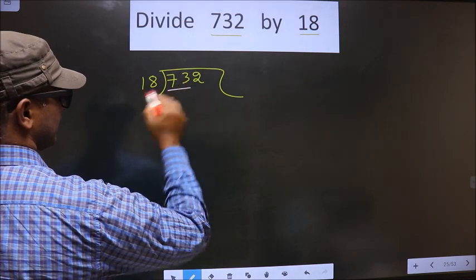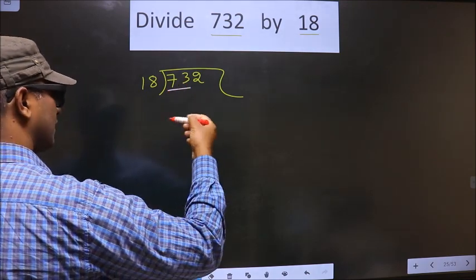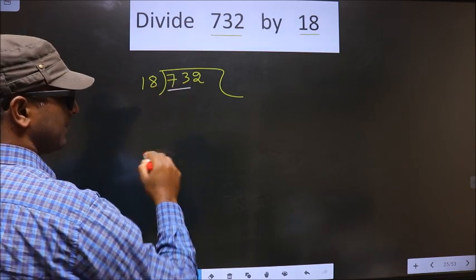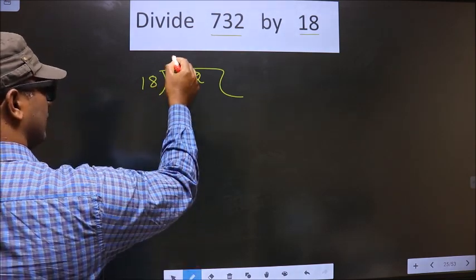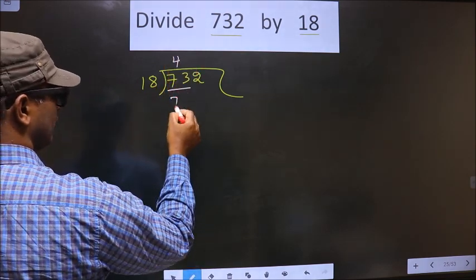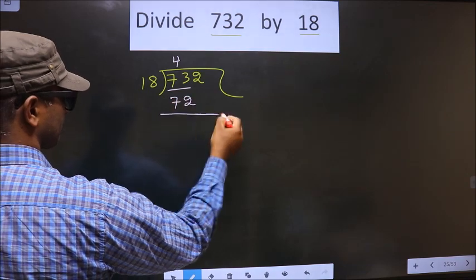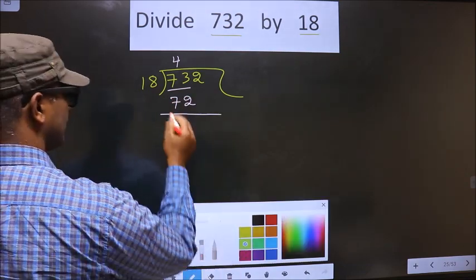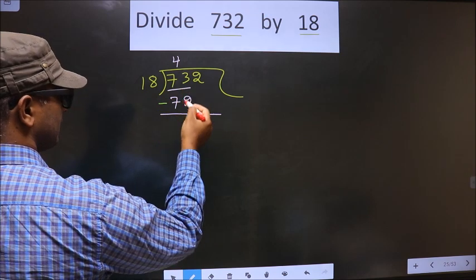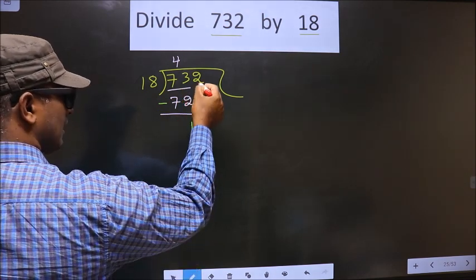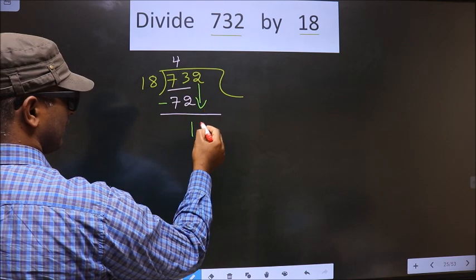So we take two numbers, that is 73. Now, a number close to 73 in the 18 table is 18 times 4 equals 72. So now you subtract. 73 minus 72 is 1. Now you take the next number down.